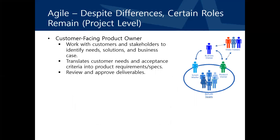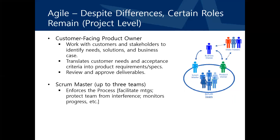Despite differences in software and hardware agile development, certain roles also remain. At the project level, there is still a customer-facing product owner. This role is responsible for interfacing with customers and stakeholders to identify their needs, proposed solutions, and make the business case for each solution. They do this by translating customer needs and acceptance criteria into requirements and specifications, and are also involved in review and approval of deliverables. The Scrum Master, who can facilitate up to a few teams, is the primary agile process facilitator. Their primary responsibilities are to facilitate daily Scrum meetings, protect the team from interference, and monitor the team's progress.